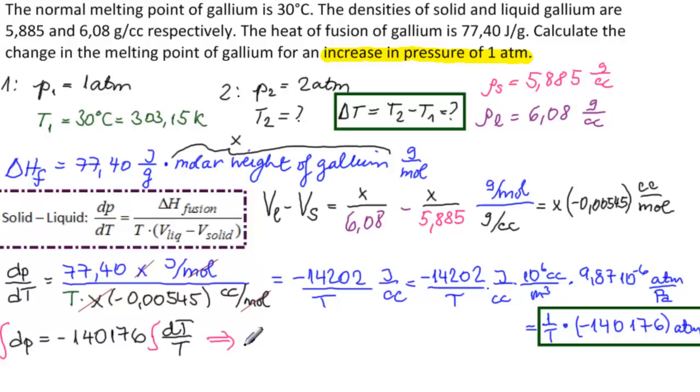We get the integral of this side is p equals minus 14176 times ln of T plus some constant. We will substitute our complete information here into this to get c, and then substitute our partial information to get T2. So we have p over minus 14176 equals ln of T plus c. Substituting P1 to 1 and T to 303.15, we will get c equals 1 over this minus ln of that.